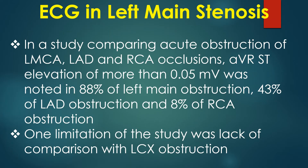In a study comparing acute obstruction of left main, left anterior descending, and right coronary occlusions, AVR ST elevation of more than 0.05 mV was noted in 88% of left main obstruction, 43% of LAD obstruction, and 8% of RCA obstruction. One limitation of the study was the lack of comparison with left circumflex obstruction.